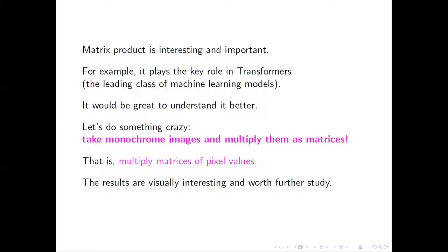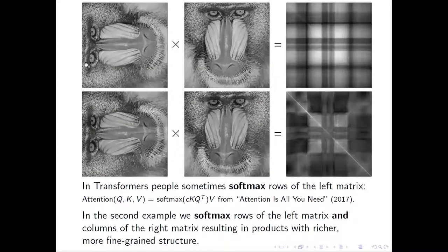Take images and multiply their matrix of pixel values by matrix product. Let's see. Multiplying transposed monkey by monkey gives the result which has plenty of information.